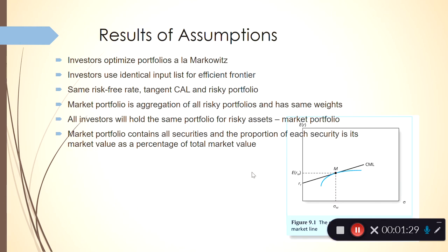The result of these assumptions is that investors optimize their portfolio a la Markowitz. That means that every single investor goes out there, examines the risk-return profile, and maximizes their Sharpe ratio. The Sharpe ratio is the rate of return on your portfolio minus the risk-free rate divided by a risk or variance measure.